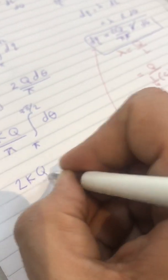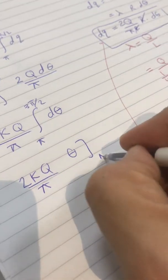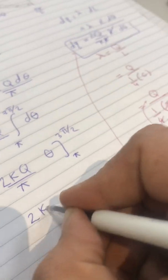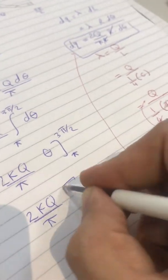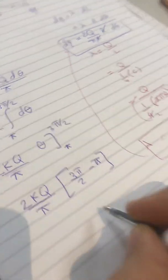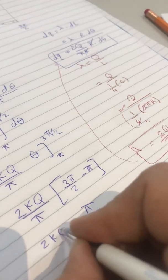Which will be 2 K Q over Pi R. Integration of D Theta is Theta from Pi to 3 Pi over 2. So, the final answer, 2 K Q over Pi R, 3 Pi over 2 minus Pi, which is Pi over 2, 2 K Q over Pi.